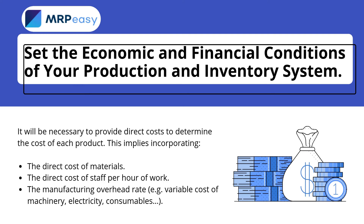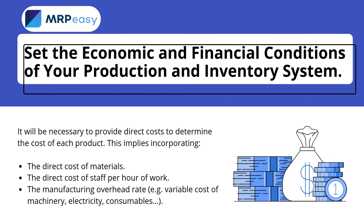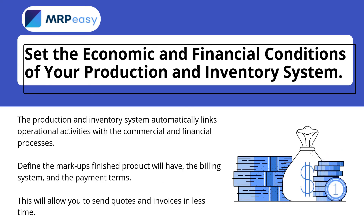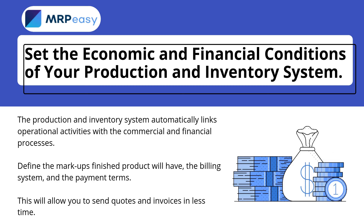It will be necessary to provide direct costs to determine the cost of each product. This implies incorporating the direct cost of materials, the direct cost of staff per hour of work, and the manufacturing overhead rate — for example, variable cost of machinery, electricity, and consumables. The production and inventory system automatically links operational activities with commercial and financial processes.